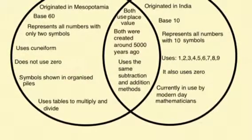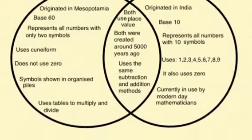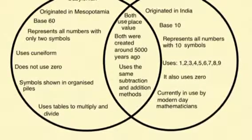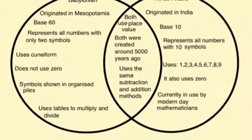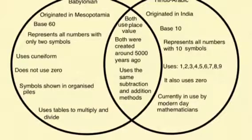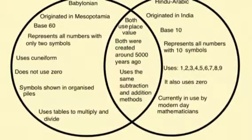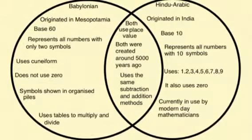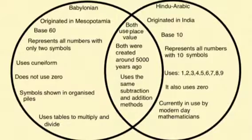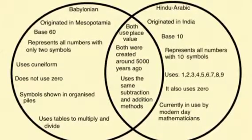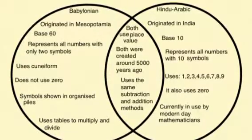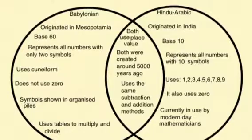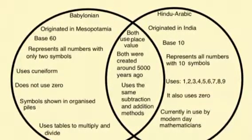After completing a lot of research on both the Babylonian and the Hindu-Arabic number systems, I was able to compare and contrast the two. The Babylonian number system originated in Mesopotamia, uses base 60, represents all its numbers with only two symbols, uses cuneiform, does not use zero, shows symbols in organized piles, and uses tables to divide and multiply. The Hindu-Arabic system originated in Asia, uses base 10, represents all numbers with 10 symbols (1 through 9 plus zero), and is currently used by modern-day mathematicians. Both systems use place value, were created around 5,000 years ago, and use the same subtraction and addition methods.